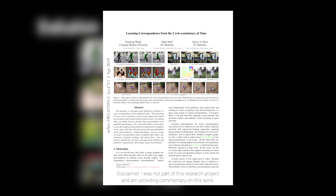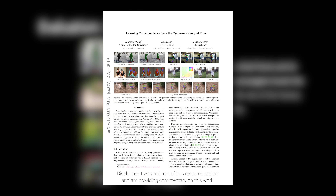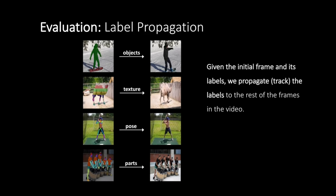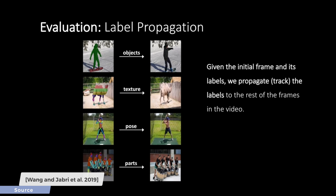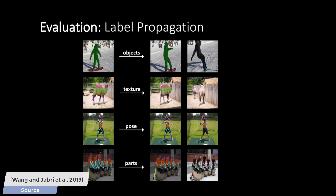Dear Fellow Scholars, this is Two Minute Papers with Károly Zsolnai-Fehér. There are many AI techniques that are able to look at a still image and identify objects, textures, human poses, and object parts in them really well.